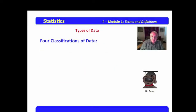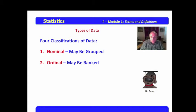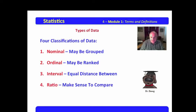Now, there are basically four classifications of data. Nominal data may be grouped. Ordinal data may be ranked. Interval data have equal distance between, and ratio data makes sense to compare. Now, we'd ask ourselves, what does all this mean? In order to understand this, we would look at some examples.